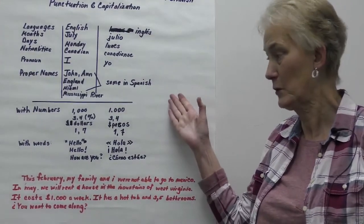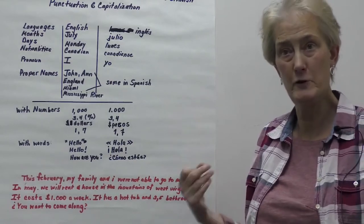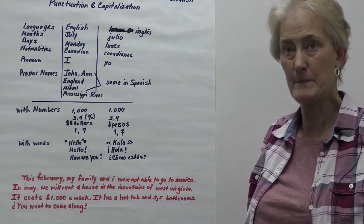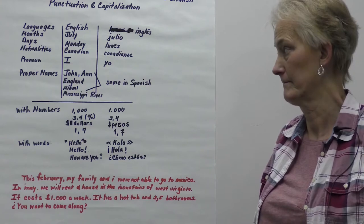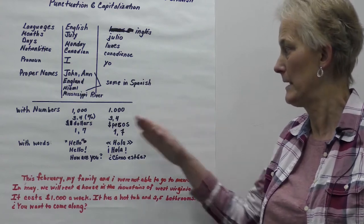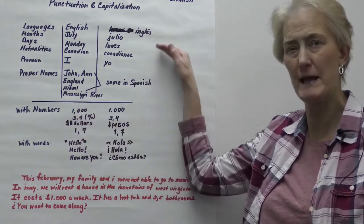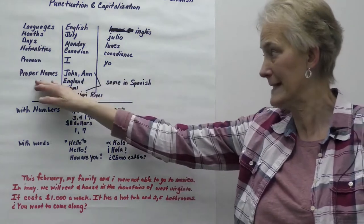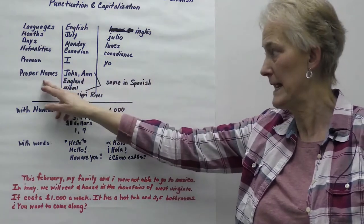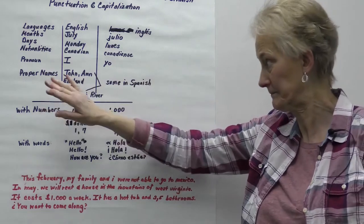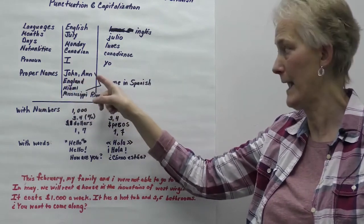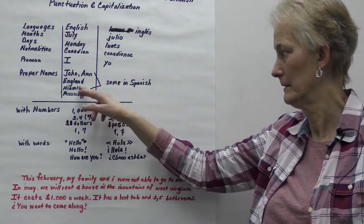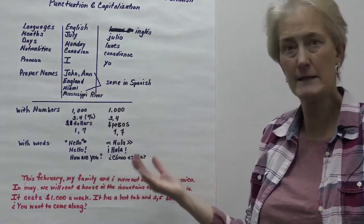What I did not include here, but I think we would all know anyway, is that the beginning word in a sentence is always capitalized in Spanish and English. Now, with capitalization, there are also times when it's the same — 'con esas cosas es igual' — proper names, 'nombres propios,' like John or Anne, Juan, Anna, England, Inglaterra, Miami. Proper nouns of people and places are always capitalized in English and in Spanish.